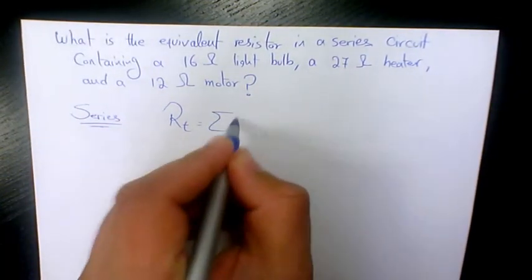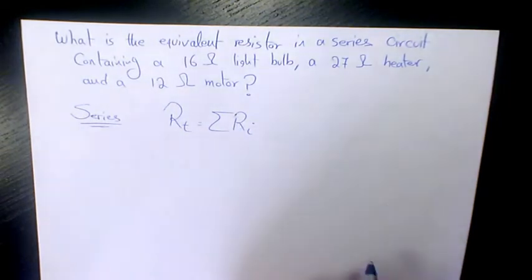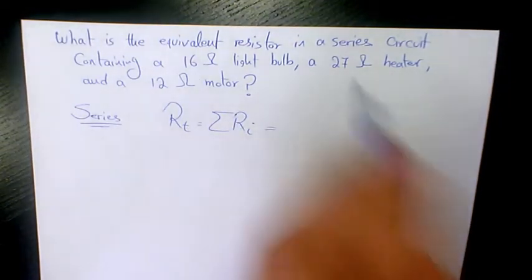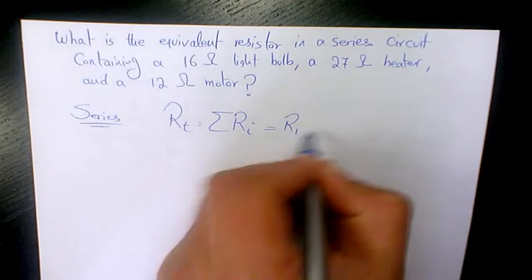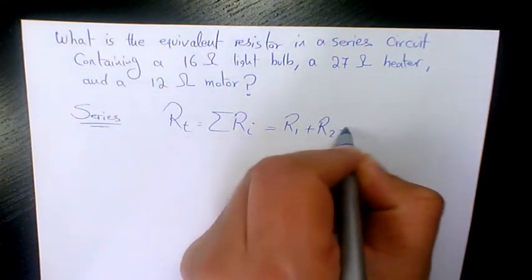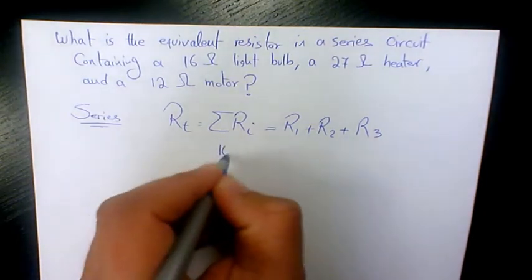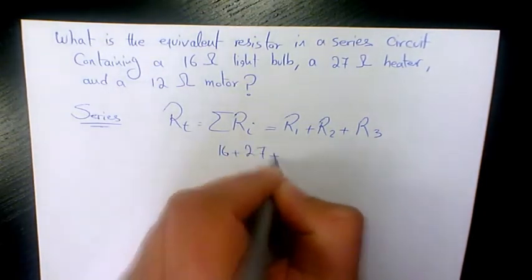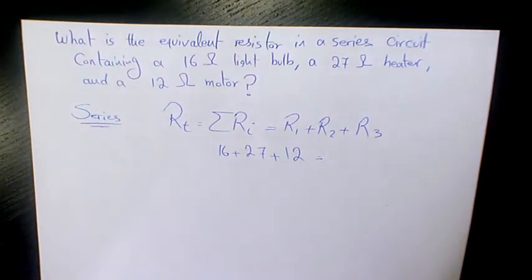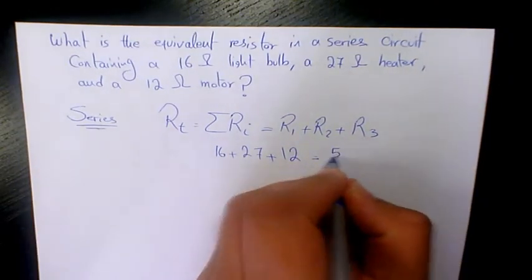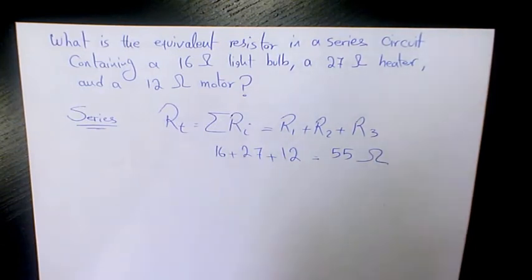So we have three of them here, which is going to be R1 plus R2 plus R3. That is 16 plus 27 plus 12 ohms, which will be 55 ohms. So 55 ohms is going to be the equivalent resistor in the series circuit.